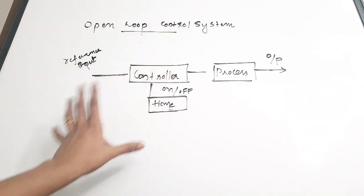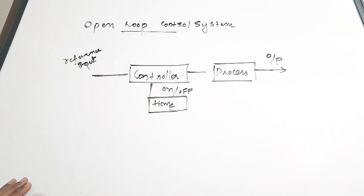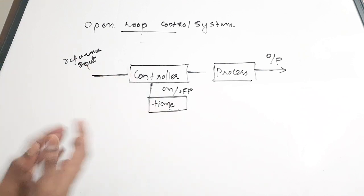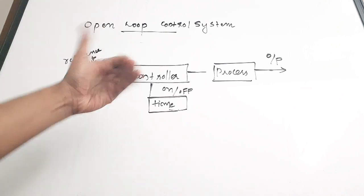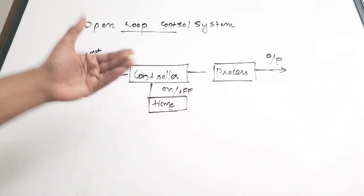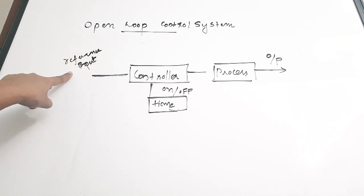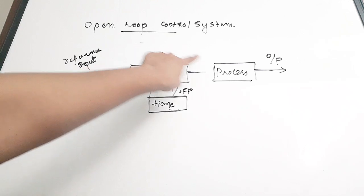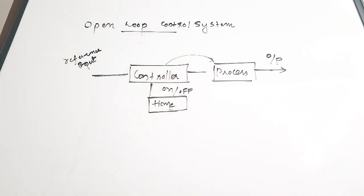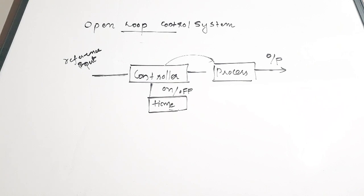The first type is the open loop control system. In its structure, there is a process which the system controls, a controller which is the core of the system, and a timing circuit that turns the controller on and off. There is no connection from the output to the controller. At a particular time the controller starts working and controls the process; when the timing circuit turns it off, controlling stops. This is based on some reference input fed to the controller, which produces signals to control the process. It is a very simple system with no feedback.